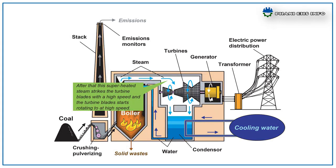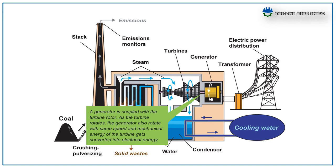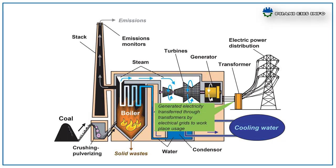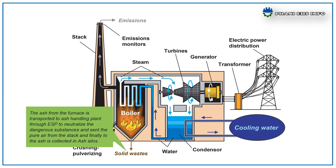After that, the superheated steam strikes the turbine blades with high speed and the turbine blades start rotating. The stored potential energy of the steam is converted into mechanical energy. A generator is coupled with the turbine rotor. As the turbine rotates, the generator also rotates with the same speed and mechanical energy of the turbine gets converted into electrical energy. Generated electrical energy is transferred through transformers by electrical grids to the workplace. The burnt flue gases from the furnace release through the chimney under the control of CEMS operations. The ash from the furnace is transported to the ash-handling plant through ESP to neutralize the dangerous substances and send pure air from the stack, and finally ash is collected in ash silos.